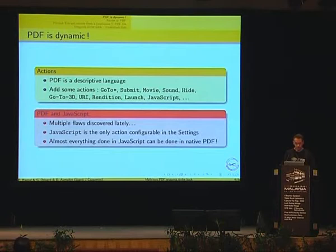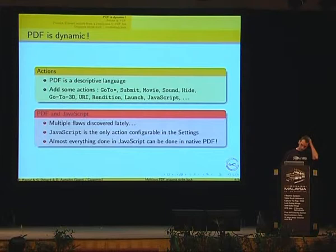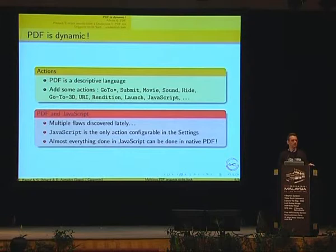Many, many flows have been discovered in the JavaScript implementation lately. What is interesting is that JavaScript is the only action that is configurable in the configuration file — the only one you can switch on or switch off. All others are non-configurable. Additionally, when you can do something in JavaScript, you can usually also do it natively in the PDF language. The main difference between JavaScript and the PDF language is just the syntax and the if/loop statements.